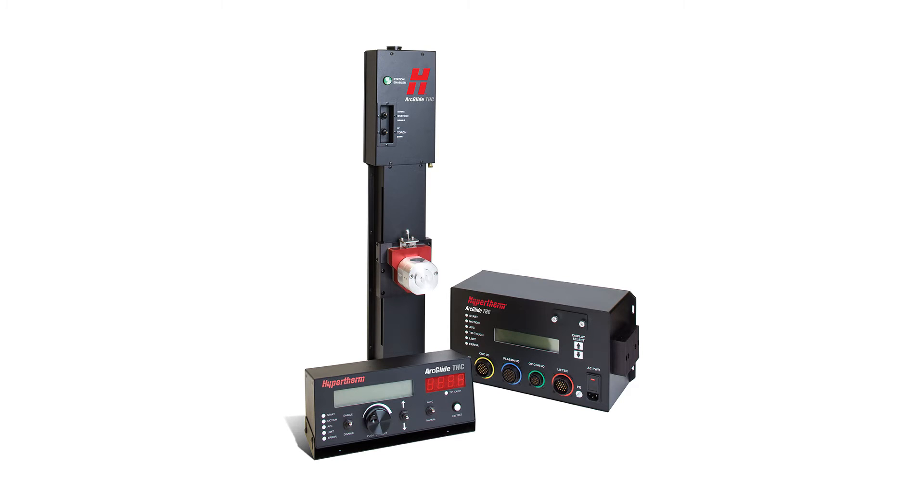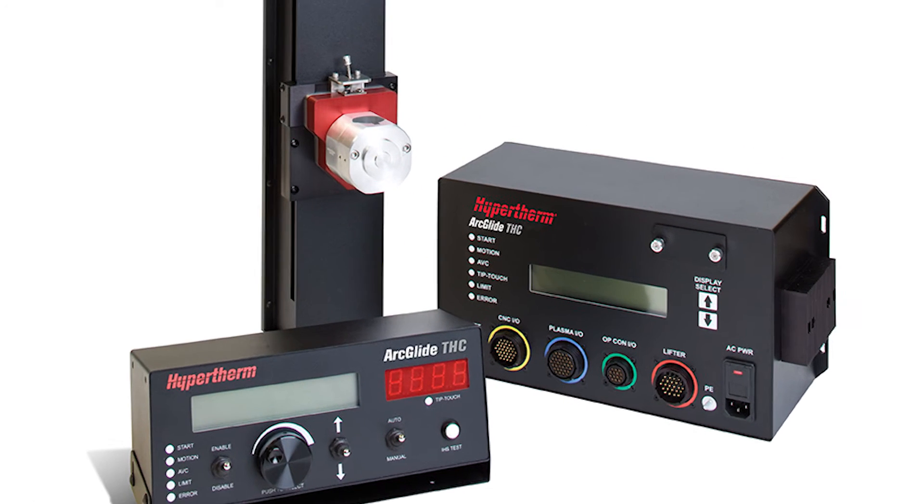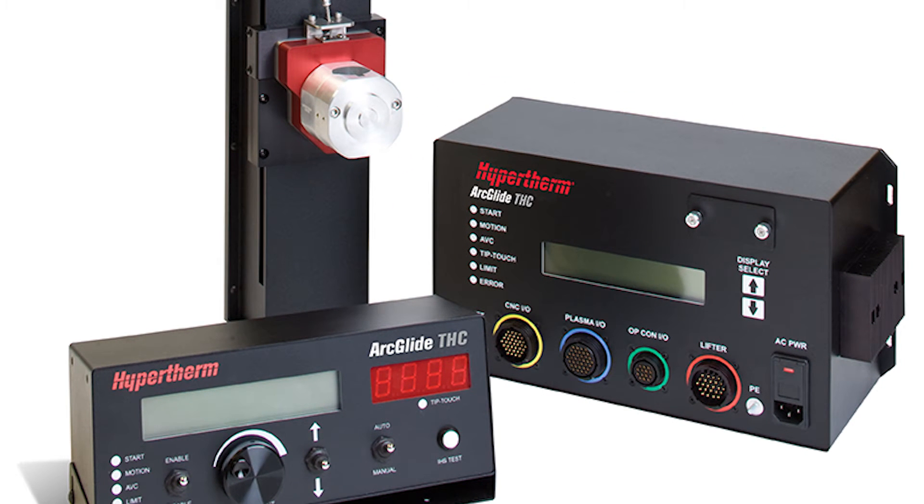If your system has a torch height controller that uses arc voltage to maintain the torch to work distance, the arc voltage must be changed to achieve maximum life and cut quality from a silver plus electrode.